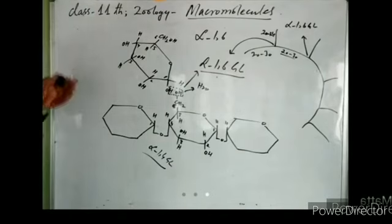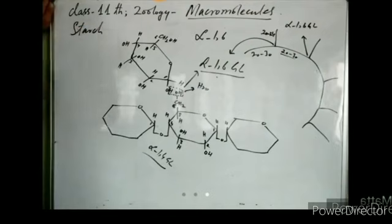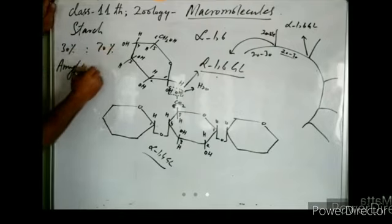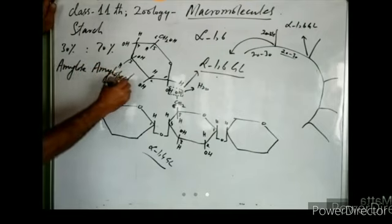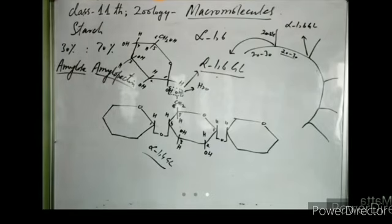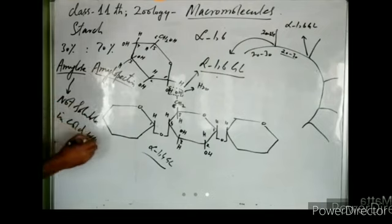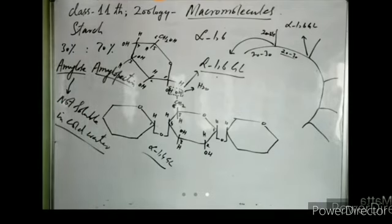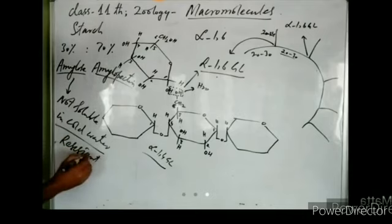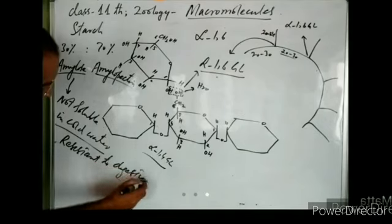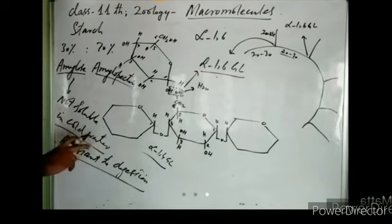Starch is formed of two components: amylose and amylopectin. A starch molecule contains 30% amylose and 70% amylopectin. Amylose is not soluble in cold water and is resistant to digestion — it is not easily digested.